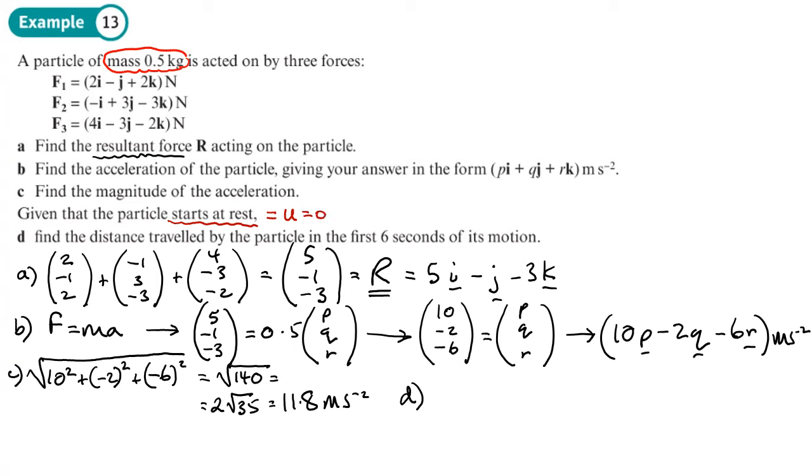So what have we got for SUVAT? S, u, v, a, t. So time is six, that's a scalar. Our acceleration, well we've worked out the magnitude of that so we can use this 11.8, we'll use the exact value.